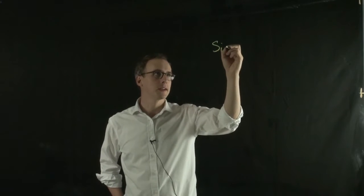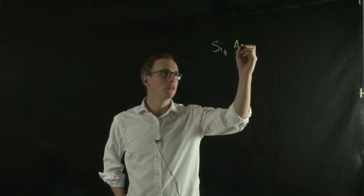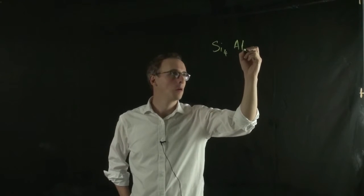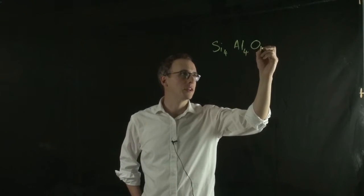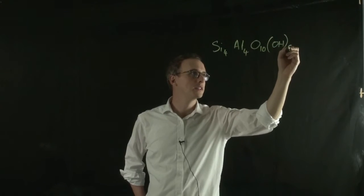So if I put the chemical formula for kaolinite onto the board, it would look like this: Si4Al4O10OH8.